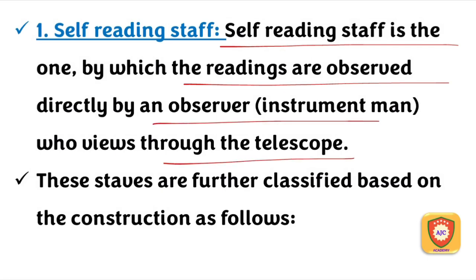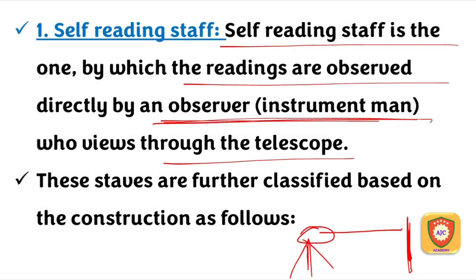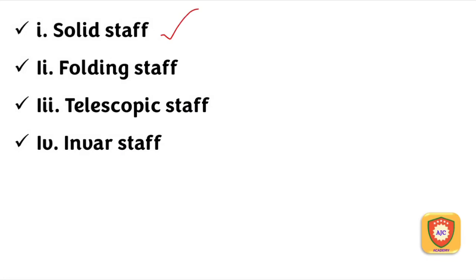The observer reads the leveling staff through the telescope and notes the reading directly. This reading is called the observer's reading. The self-reading staff comes in different types: solid staff, folding staff, telescopic staff, and invar staff.